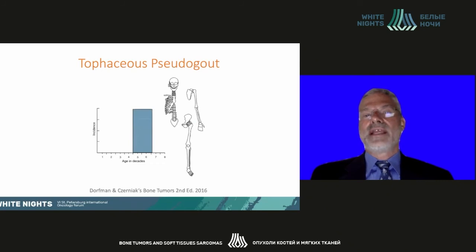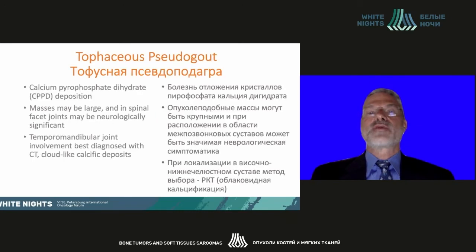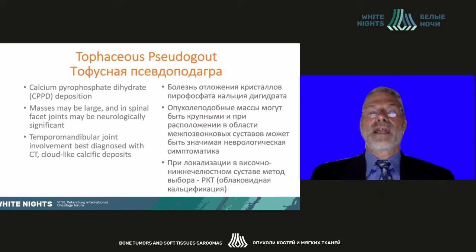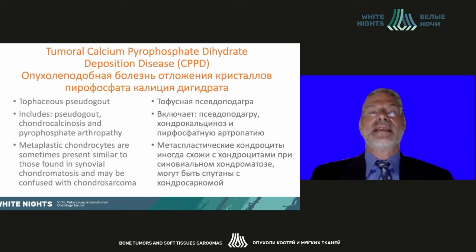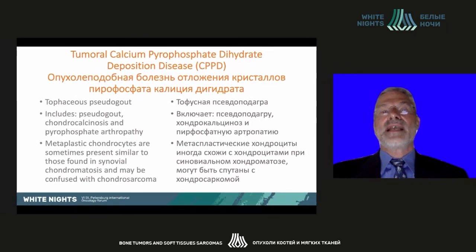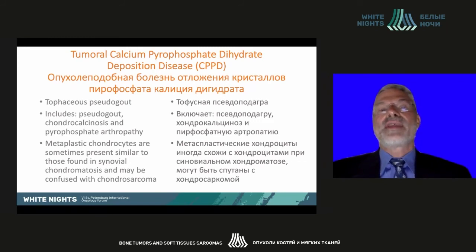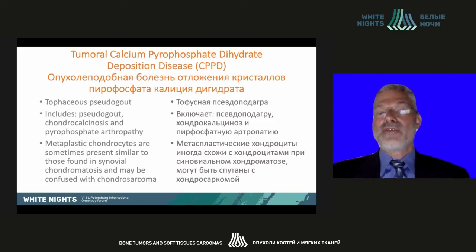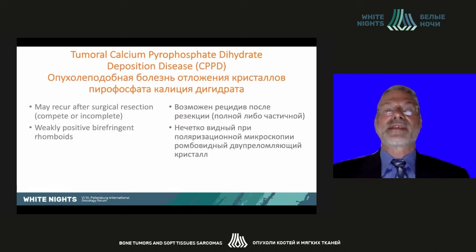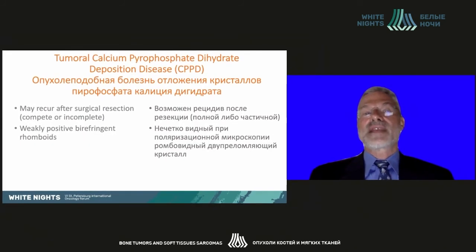Tofaceous pseudogout is a form of pyrophosphate arthropathy, most classically ages 45 to 65, involving calcium pyrophosphate dihydrate depositions. The masses can be large, can form in facet joints, can be neurologically significant, and can cause cloud-like formation on CT. Tofaceous pseudogout can include chondrocalcinosis and pyrophosphate arthropathy. Pseudogout is really a clinical presentation. Metaplastic chondrocytes are sometimes present and can be confusing — people can confuse this with synovial chondromatosis. After surgical resection, these can recur.